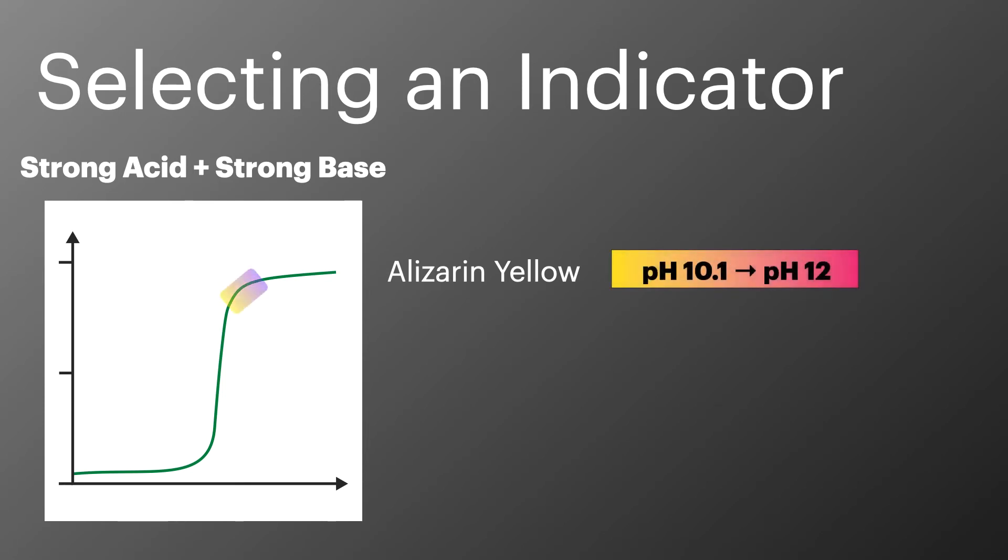Alizarin yellow has a pH range of 10.1 to 12. This is high on the pH curve and misses the equivalence point. Phenol red has a pH range of 6.7 to 8.1 and this is across the equivalence point and would make a good indicator for this titration.